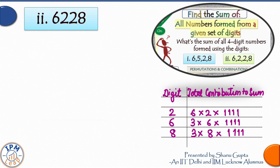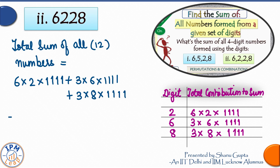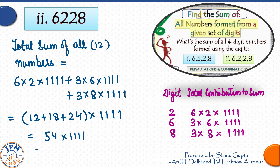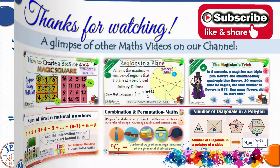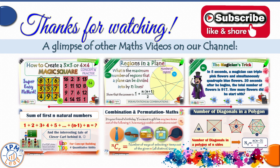The rest is just calculations. Adding the contribution of all 3 digits to the sum, our answer comes out to be 59994. That brings us to the end of this video lesson. Hope the concept is clear to you now.